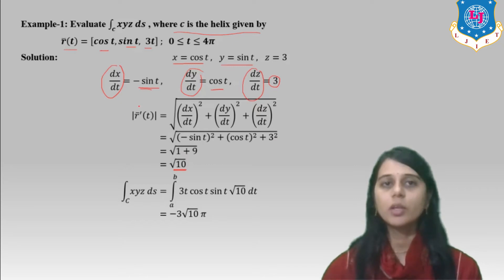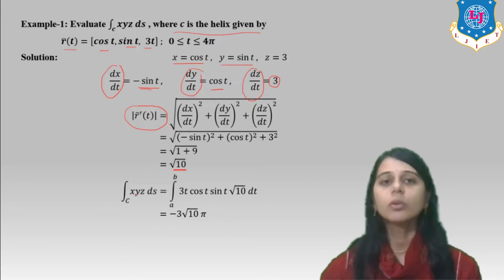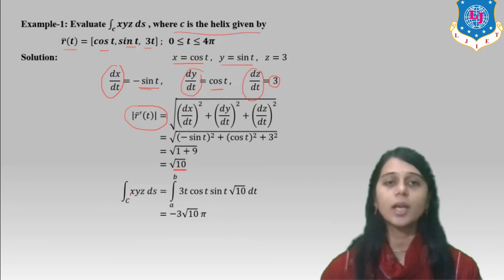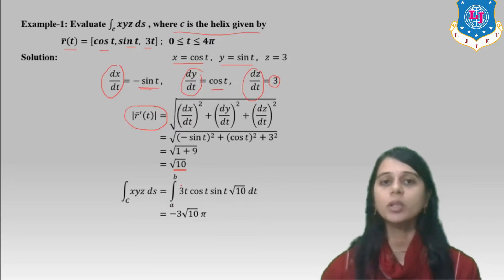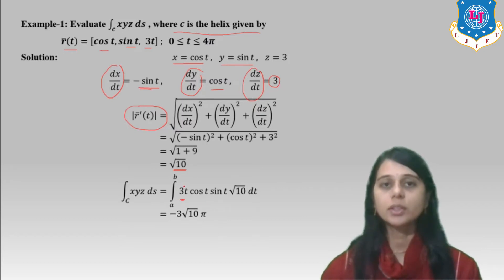We get the value of the modulus of R-bar prime(t) as √10. Now the line integral becomes the integral of f(x,y,z) times √10. The function x·y·z means we substitute: z = 3t, y = sin t, x = cos t. So it is x·y·z times √10 dt.